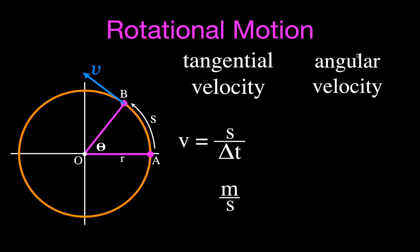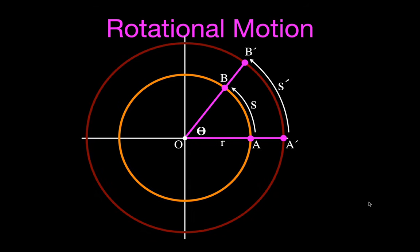For the angular velocity, it's how fast the angle is changing over time. The angular velocity is given the symbol omega — the Greek letter omega, not a W. It's simply the change in the angle over the change in time, measured in radians per second.